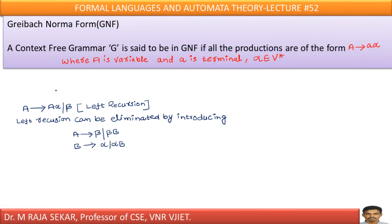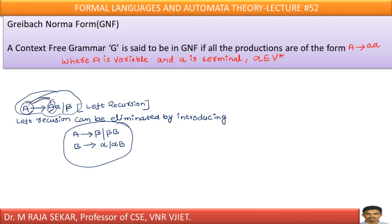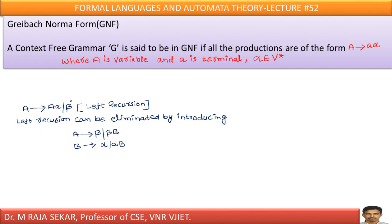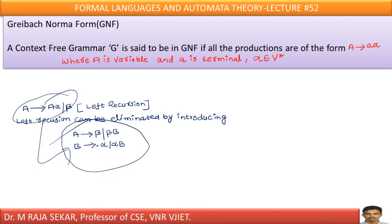Usually in Greibach Normal Form, if you come across left recursion, we must remove it using a formula. Left recursion means if there is a production A → α | β where the same A appears on both the left-hand side and right-hand side, that is known as left recursion. The formula for eliminating left recursion: replace A → α | β with A → β | B β and B → α | α B.